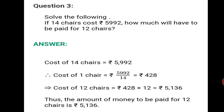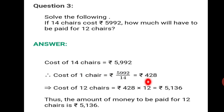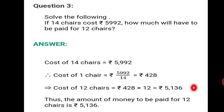Third sum: If 14 chairs cost Rs. 5,992, how much will have to be paid for 12 chairs? Cost of 14 chairs is equal to Rs. 5,992. Therefore, cost of 1 chair equals 5,992 divided by 14, which gives Rs. 428 after working. Now, cost of 12 chairs equals Rs. 428 multiplied by 12, which equals Rs. 5,136. Thus, the amount of money to be paid for 12 chairs is Rs. 5,136.